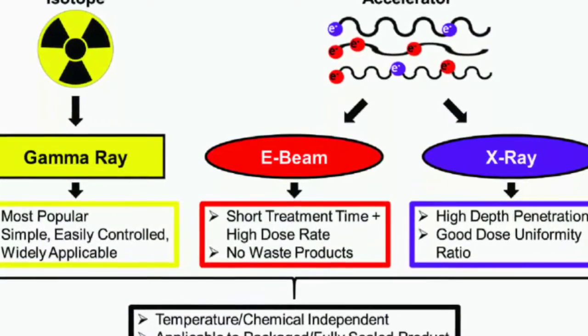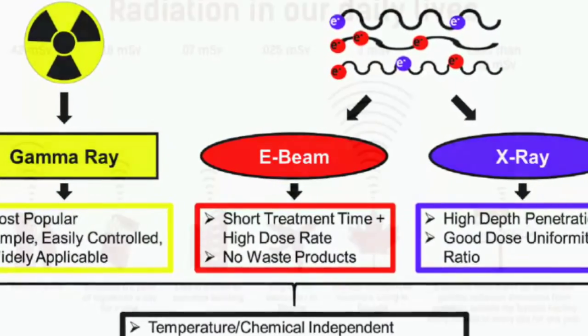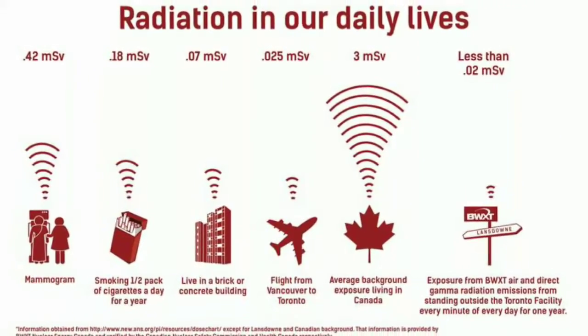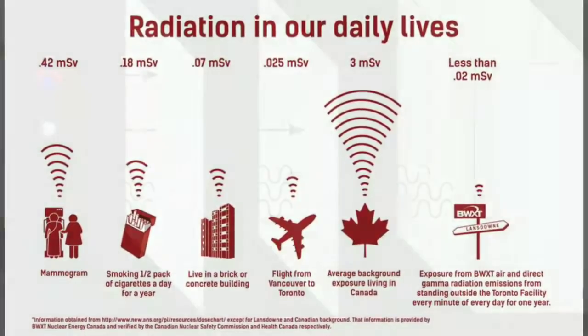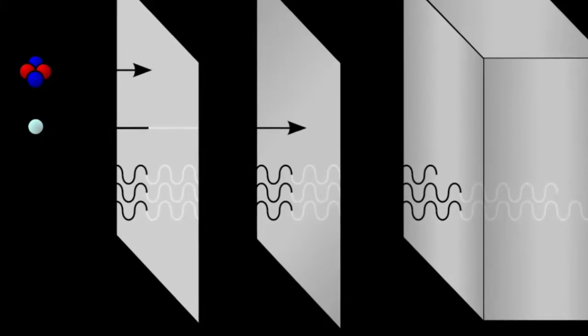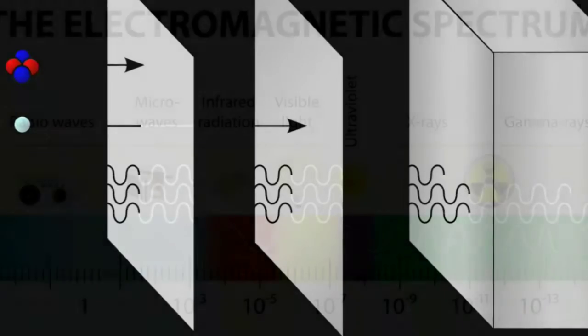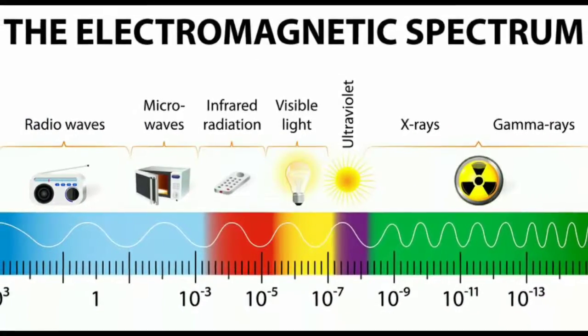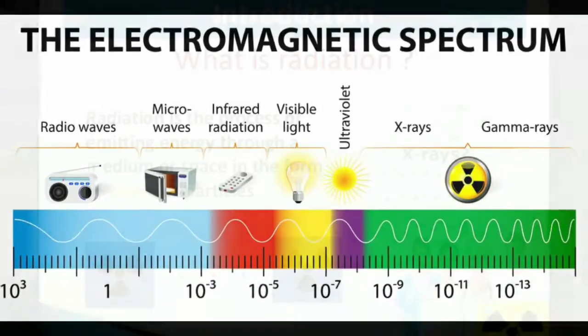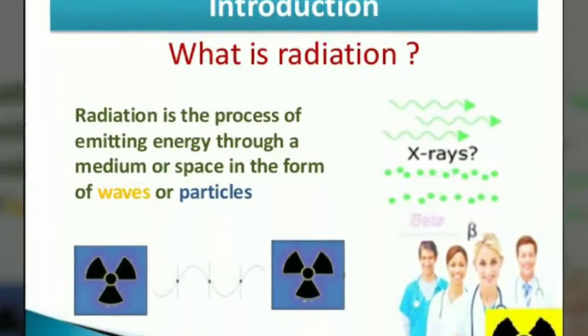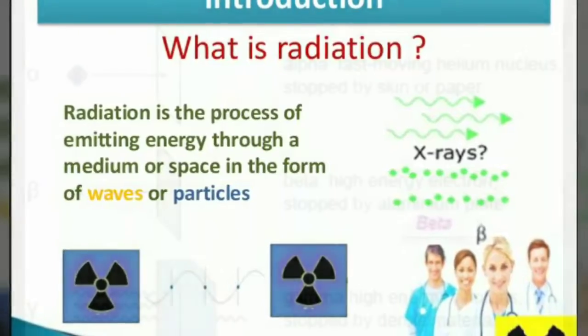categorized as either ionizing or non-ionizing depending on the energy of the radiated particles. Ionizing radiation carries more than 10 eV, which is enough to ionize atoms and molecules and break chemical bonds. This is an important distinction due to the large difference in harmfulness to living organisms.